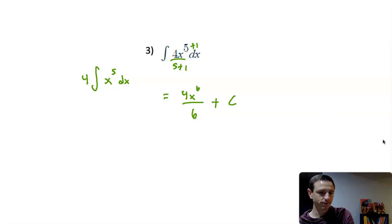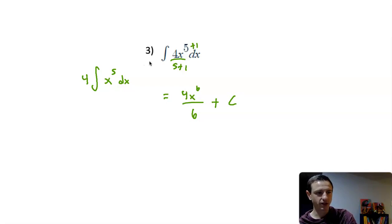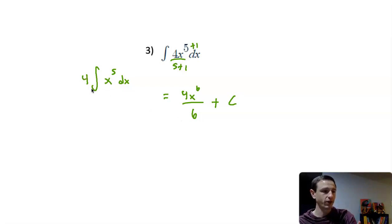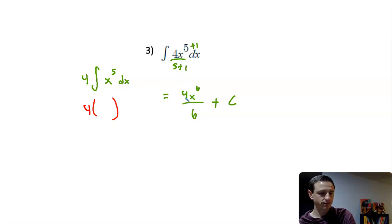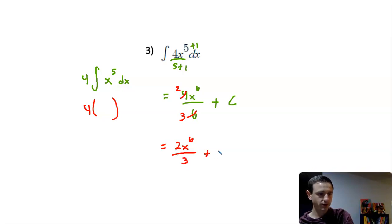After integrating, look to simplify. If you're newer, you might want to rewrite this as four times the integral so you have a visual reminder that you still have that four to multiply by whatever the integral comes out to be. Here we need to simplify four over six — the largest number that goes into both four and six is two. Two goes into four twice, and into six three times, so we get 2x to the sixth over three plus C.